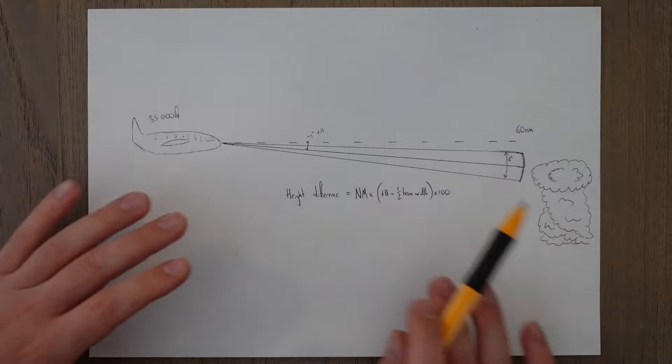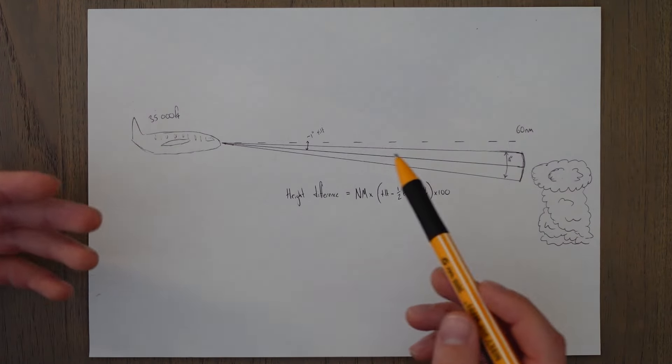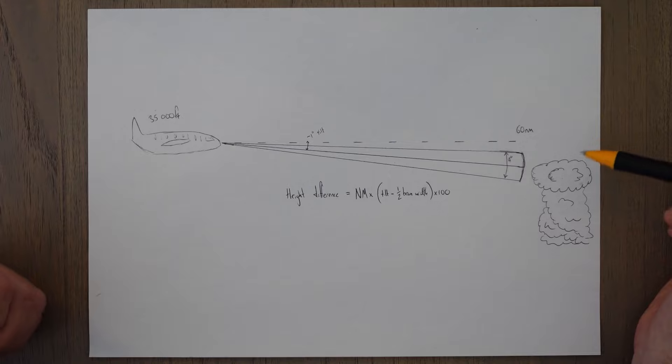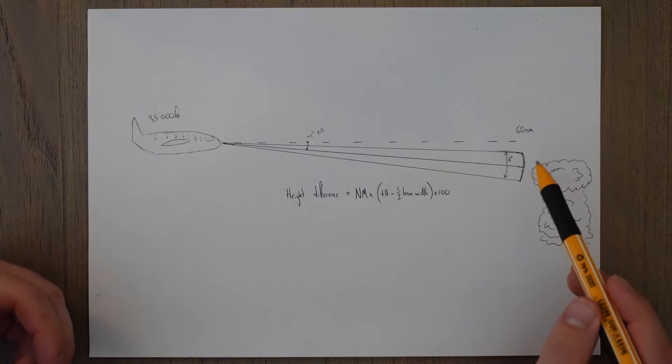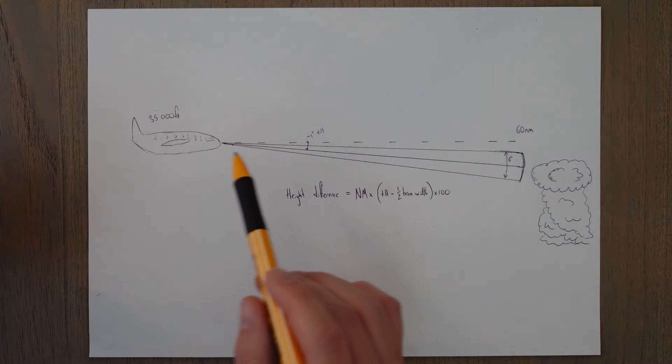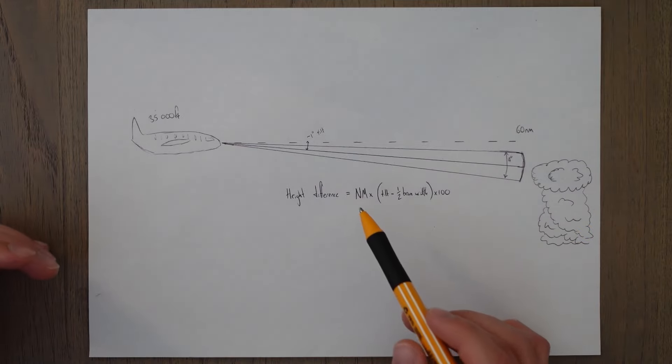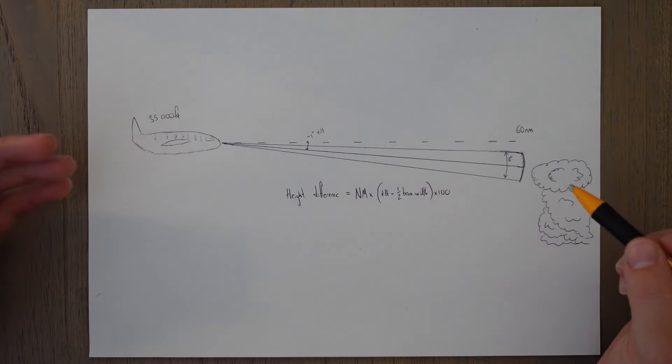For example in this situation here if we'd chosen to investigate an area of storms using this method and we found that we were getting returns at 60 nautical miles with a tilt of minus one and a beam width of four degrees and we were at 35,000 feet, what height are the cloud tops at. This is a simple plug in the numbers and calculate problem.